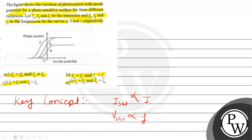अब इन दोनों relations को लेके, अगर हम इस graph को देखते हैं, तो यहाँ पर photo current IE की value given है, और anode potential यानि की VE की value given है. IC की value यहाँ पर हमें मिलेगी, IB की value यहाँ मिलेगी, और IA की value हमें यहाँ मिलेगी. तो एक चीज़ यहाँ से clear आती है: IA is not equals to IB is not equals to IC. अब frequency जो है stopping potential से relate कर रही है, तो A और B का जो stopping potential है, वो similar देखने को मिलता है, whereas C का जो potential है, वो अलग देखने को मिल रहा है.